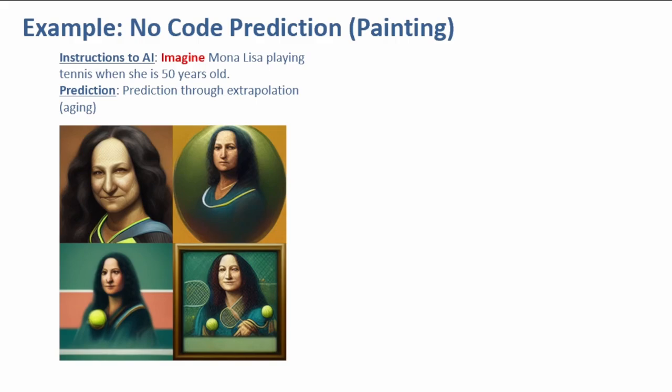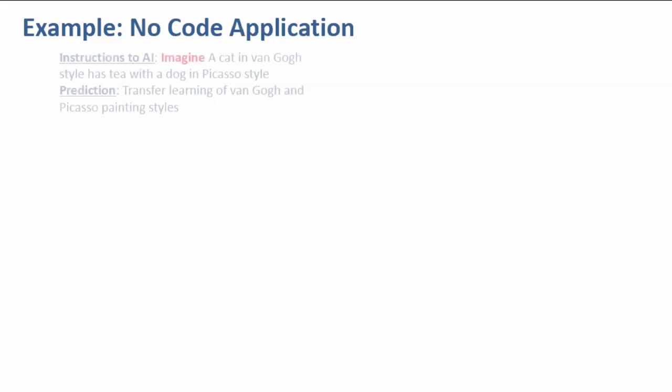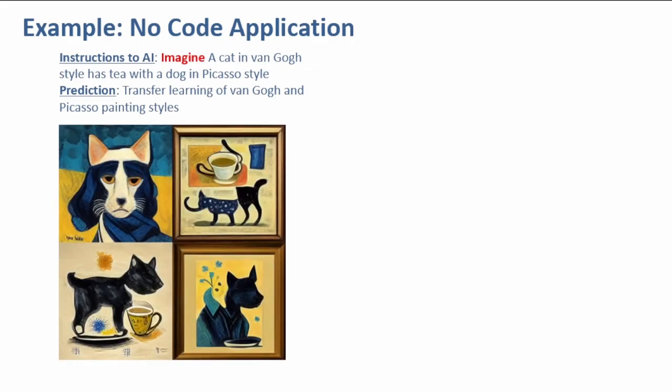AI can also predict non-existent scenarios such as the last person taking a selfie at the end of the world. AI can also make predictions using transfer learning in painting a cat and dog in Van Gogh and Picasso's painting styles.